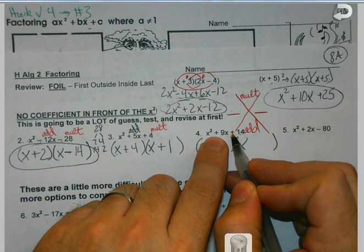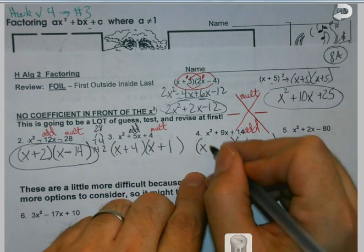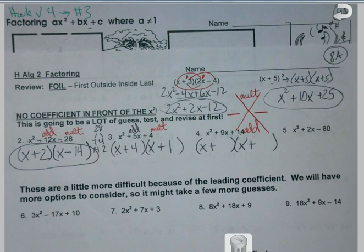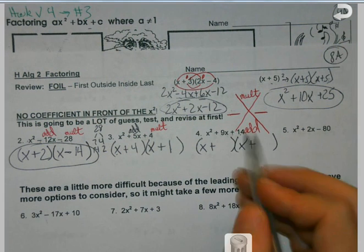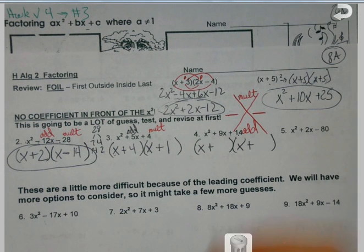A couple of things to mention here. I notice right away, because sometimes the signs can give me hints on some of this. Since I see everything's positive, I know these are both going to be plus. So multiply to 14 and add to 9. Seven and two.